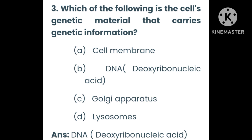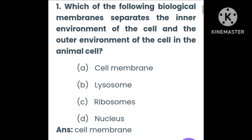Which of the following is the cell's genetic material that carries genetic information: cell membrane, DNA, Golgi apparatus, or lysosome? The answer is DNA. Which biological membrane separates the inner environment of the cell from the outer environment in the animal cell: cell membrane, lysosome, ribosome, or nucleus? The answer is cell membrane.